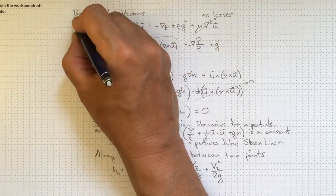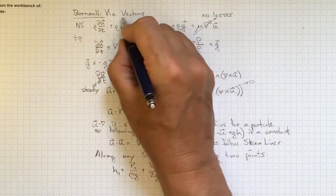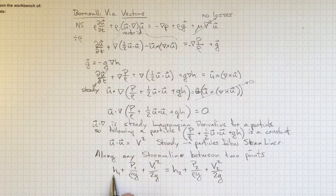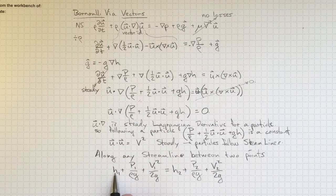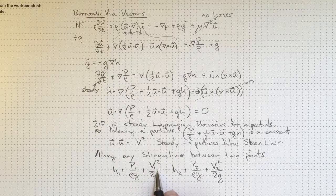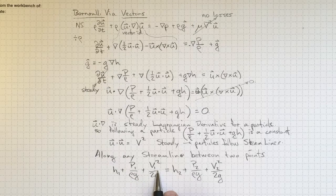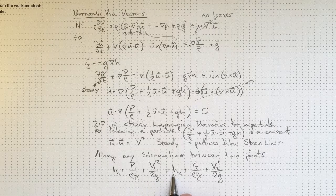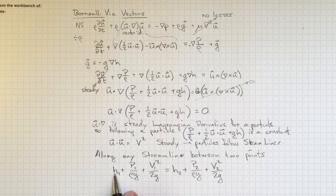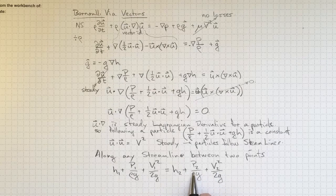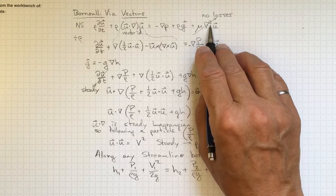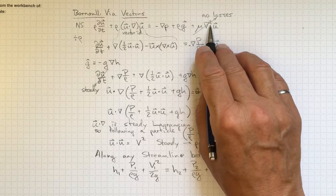So we got to Bernoulli's equation fairly directly by vector calculus. And it still means the same thing. Potential energy of elevation, plus potential energy of pressure, plus kinetic energy associated with the motion of the flow, has to remain a constant. They can be converted one into the other, but for any one particle, this energy will be conserved unless we have a mechanism like this one to add or remove energy from that particle.